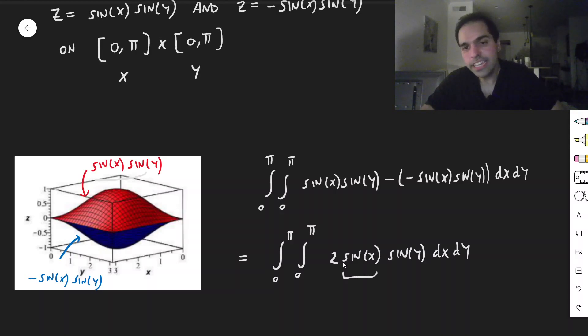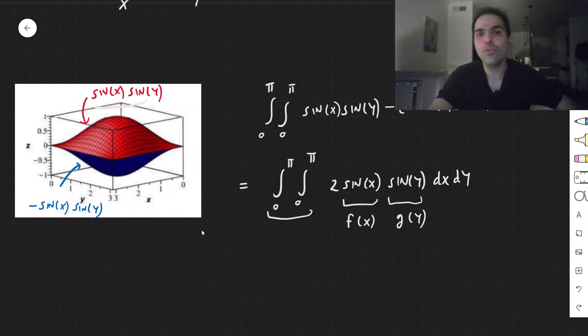And sure, you could find an antiderivative, but it turns out here we can simplify our task tremendously. Because notice, here what we have is a function of x. So, f of x is sine of x. And a function of y. And we integrate over constants. And whenever this happens, it turns out you can just split up the integrals. And if you want, I can prove it at the end.